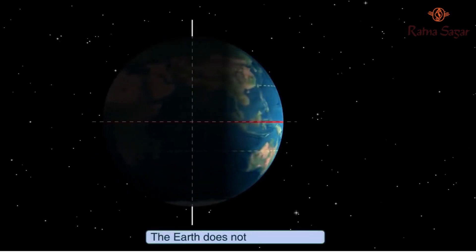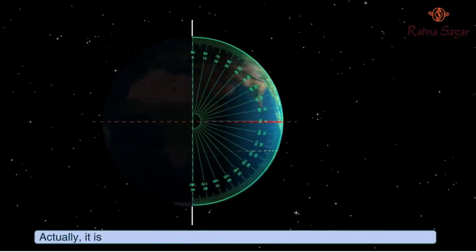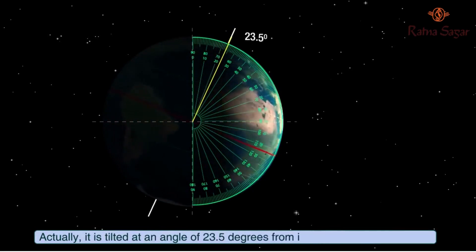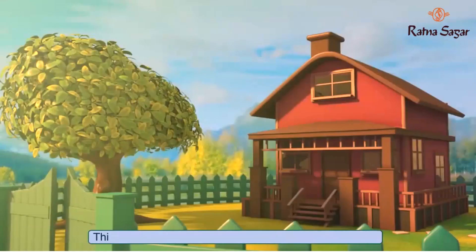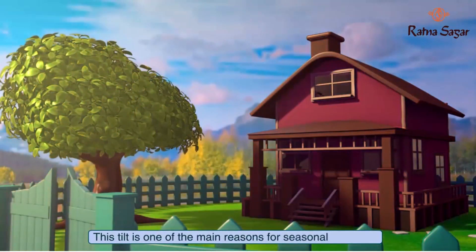The Earth does not sit straight up. Actually, it is tilted at an angle of 23.5 degrees from its vertical axis all the time. This tilt is one of the main reasons for seasonal changes.